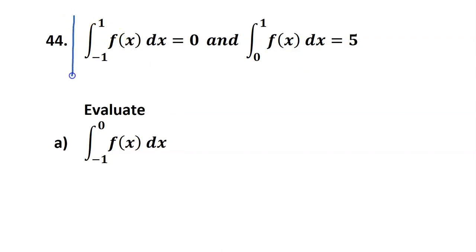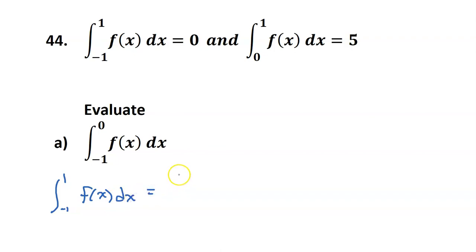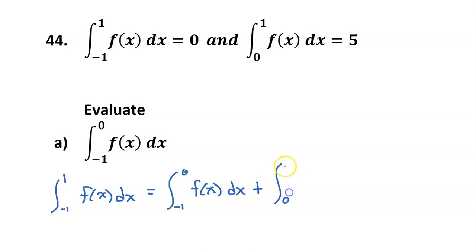Take a close look at this definite integral. It makes sense that since a definite integral is just the area under the curve from the lower limit to the upper limit, the integral from negative 1 to positive 1 should equal the integral from negative 1 to 0 plus the integral from 0 to 1.